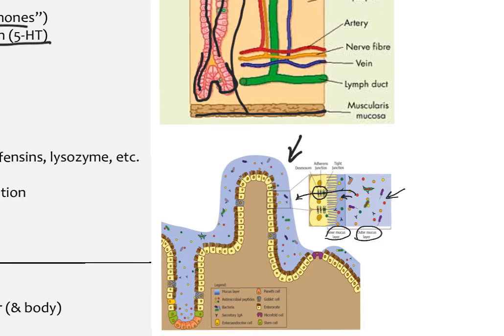If the tight junctions are intact, all nutrients pass through the enterocyte and are absorbed into lymph or blood vessels at the basolateral end. However, if those junctions break down, peptides and antigens can leak through that space and go directly into the blood without being properly processed by the enterocytes.